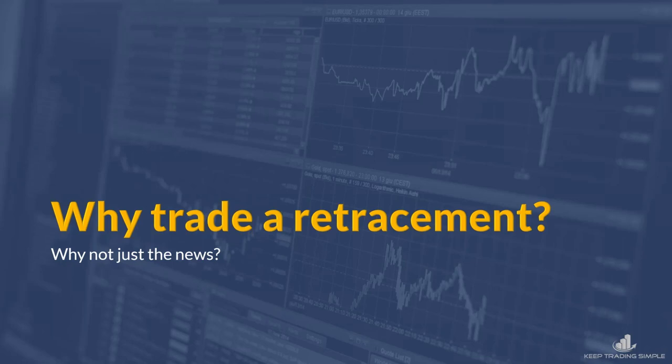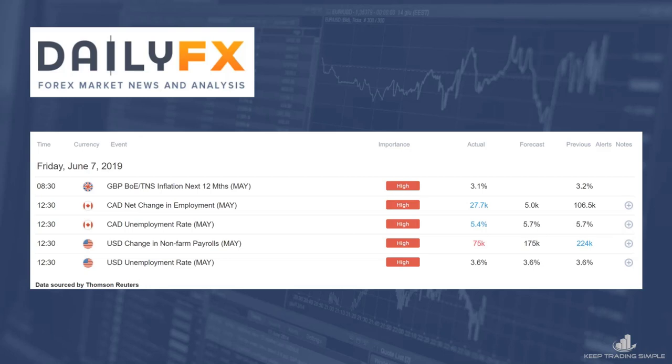Has anything really changed because of one economic news release number? The answer is no. So where do you find news? If you haven't been to news-based sites, it's very important — I don't care if you trade this strategy or not. If you are in the markets, you need to know when all the economic news releases are. Go to Daily FX or Forex Factory. They all rank news releases by importance: low, medium, and high. The high ones tend to have the largest parabolic spikes.